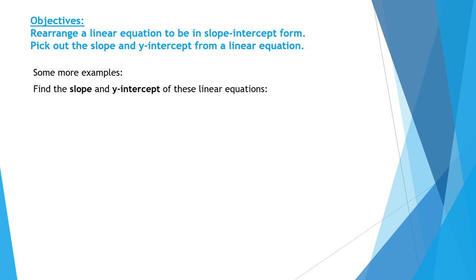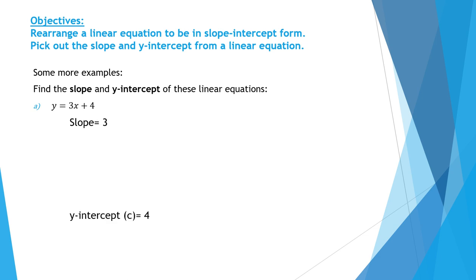Some more examples. Find the slope and y-intercept of these linear equations. In the equation y equals 3x plus 4, the coefficient of x is 3, which means the slope is 3. The constant number is 4, which means the y-intercept is 4.